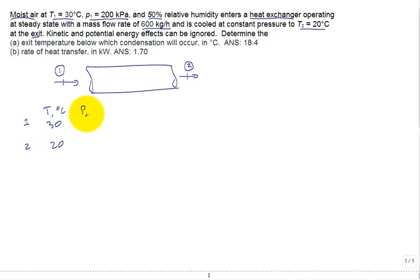Our pressure in kPa is 200. We read the problem over. There's nothing about a pressure drop. So we assume that the pressure stays 200 kPa throughout. And we have a relative humidity of 50%.